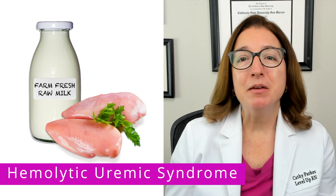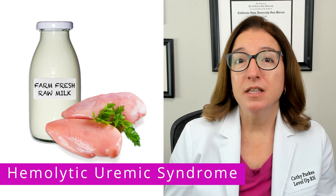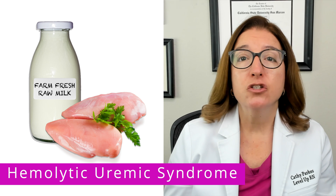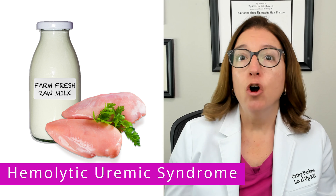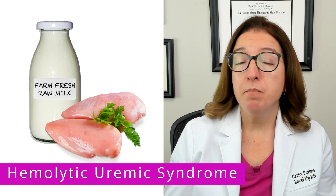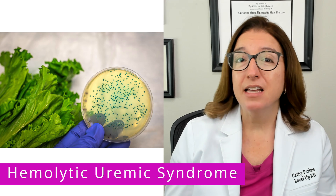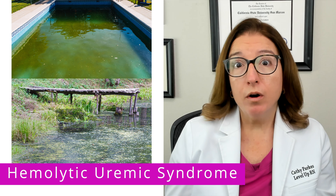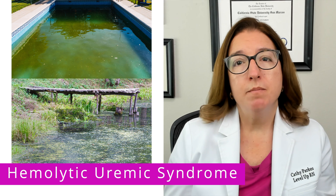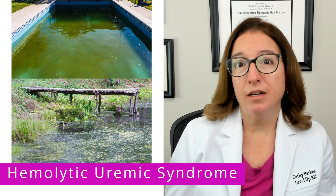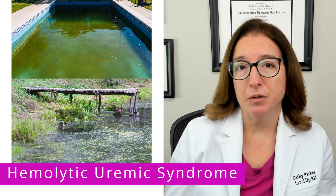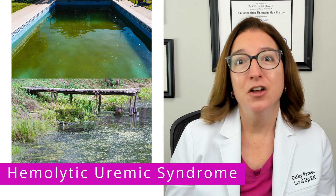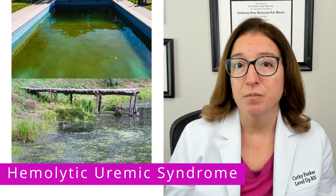A child can be infected with this particular strain of E. coli if they consume undercooked meats, raw or unpasteurized milk, or contaminated fruits or vegetables, or if they swim in contaminated pools or lakes. These are all important risk factors for hemolytic uremic syndrome.